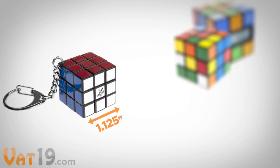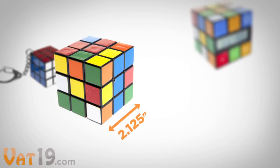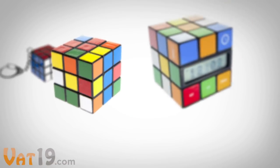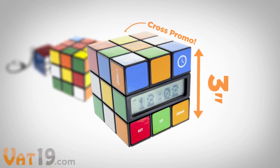Measuring in at just over an inch on each side, the Rubik's Cube key ring is about half the size of its retro counterpart, and about a third the size of the Rubik's Cube alarm clock.